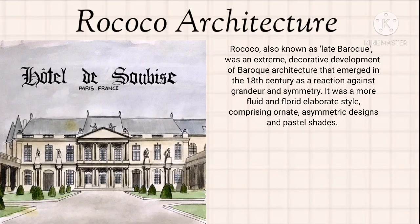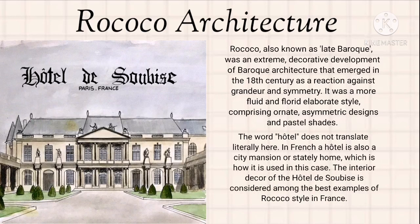Rococo architecture, also known as late Baroque, was an extreme decorative development of Baroque architecture that emerged in the 18th century as a reaction against grandeur and symmetry. It was a more fluid and thoroughly elaborate style comprising ornate asymmetric designs and pastoral themes. In French, a hotel is also a city mansion or stately home. The interior decor of the Hotel de Soubise is considered among the best examples of the Rococo style in France, and this structure is located in Paris, France.